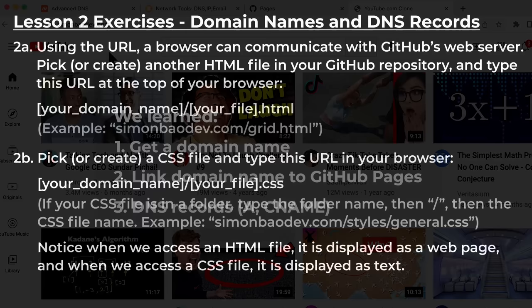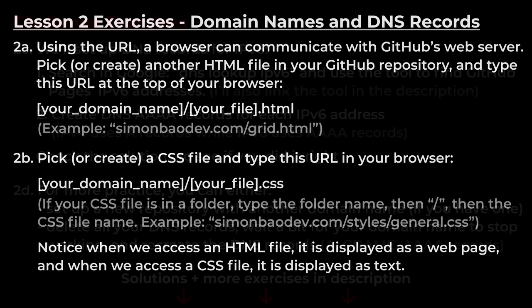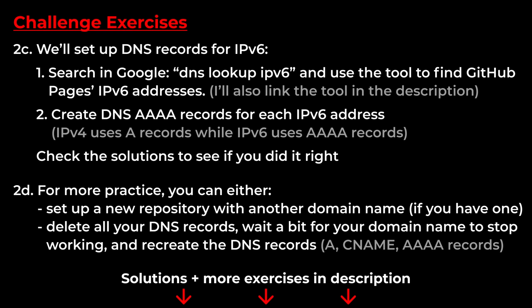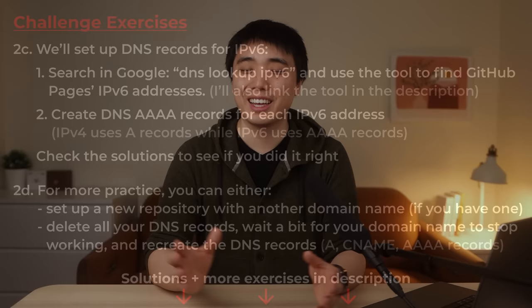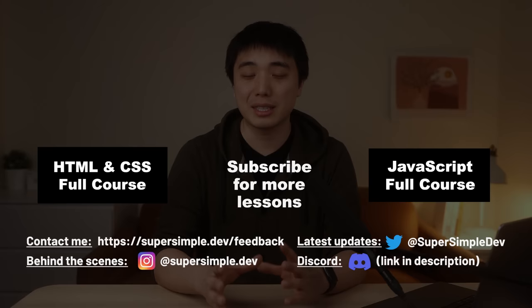In this section, we learned how to get a domain name from a domain registrar, and we learned how to link our domain name to our GitHub Pages website using DNS records — specifically the A record and the CNAME record. Thanks for watching. We learned how to take a website created on our computer using HTML and CSS code and put it on the internet. We also learned how to get and set up a domain name for our website. If you're interested in more lessons, you can check out my HTML and CSS full course, or if you've finished that, you can check out my JavaScript course. My name is Simon from supersimple.dev — I want to make a tech career possible for anyone.